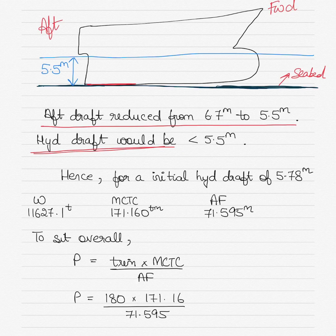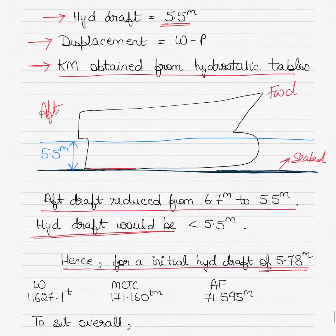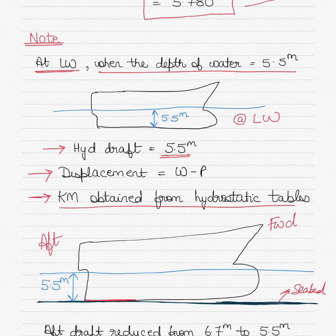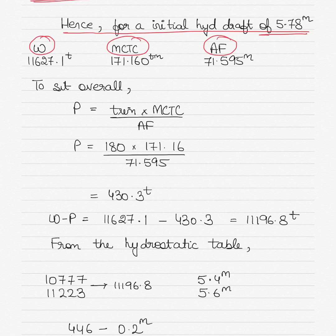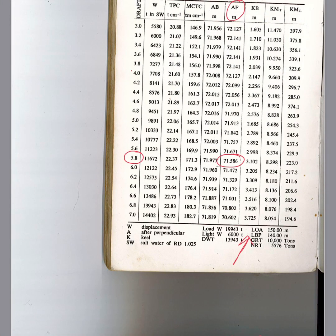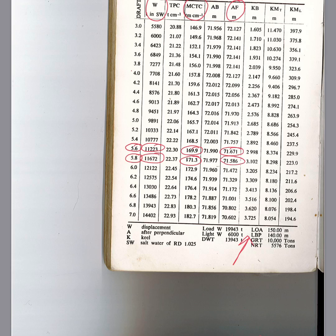For the initial hydrostatic draft of 5.78 meters, we need to find the displacement, MCTC, and AF. Go into the hydrostatic tables and find values for drafts 5.6 and 5.8, then interpolate to get the values for 5.78 meters.